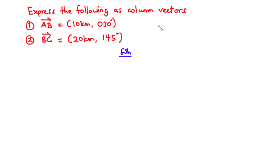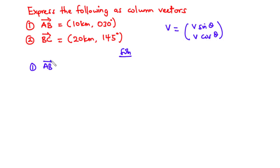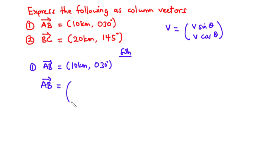As established, given vector v we can express it in column vector form as the magnitude times sine of theta and the magnitude times cosine of theta. For vector AB, the magnitude is 10 kilometers and the bearing is 30 degrees. So vector AB is equal to [10 sin30, 10 cos30].